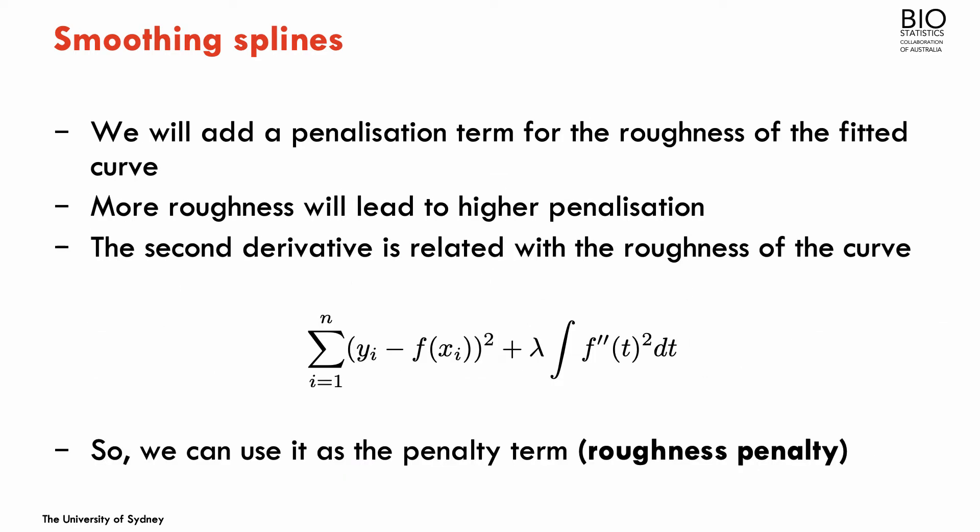The idea is the following: rather than being concerned about the number of knots and even where they are placed, we're going to allow the fitting to have many knots but penalize for the roughness of the final curve. More knots is going to increase the roughness of the fitting, so we're going to penalize the residual sum of squares by the amount of roughness of the curve.